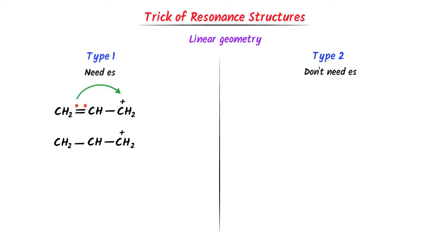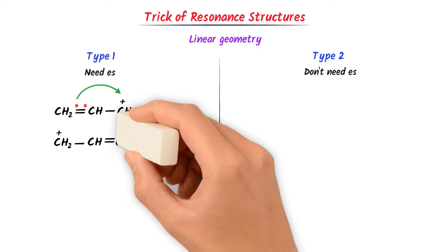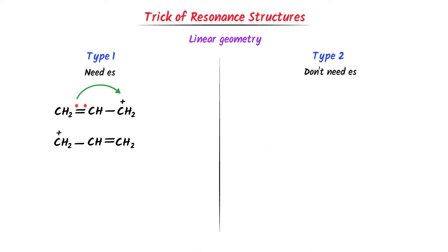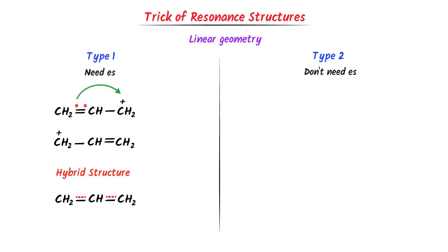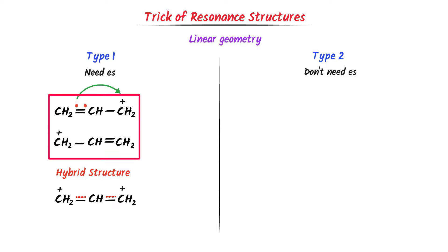Remember that when I shift electron, I shift the double bond. The first carbon has lost one electron, so a positive charge appears on it. The third carbon has gained an electron, so its octet or empty orbit is completed. For the hybrid structure, I write CH2 single bond CH single bond CH2. The double bond is present here in this structure and here in this structure, so I draw dots at both positions. These dots represent the formation of double bonds between atoms. The positive charge appears at both positions. There are two resonance structures of this compound.